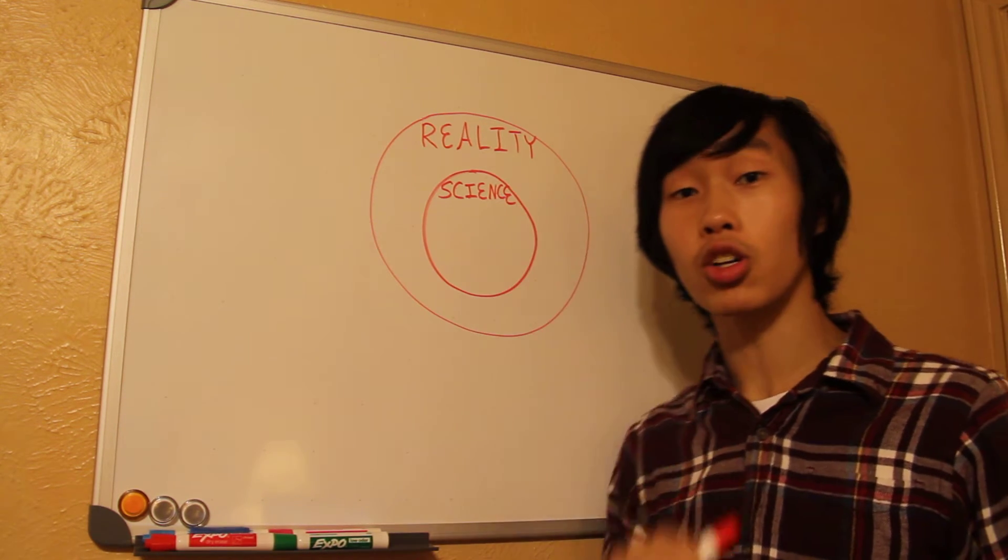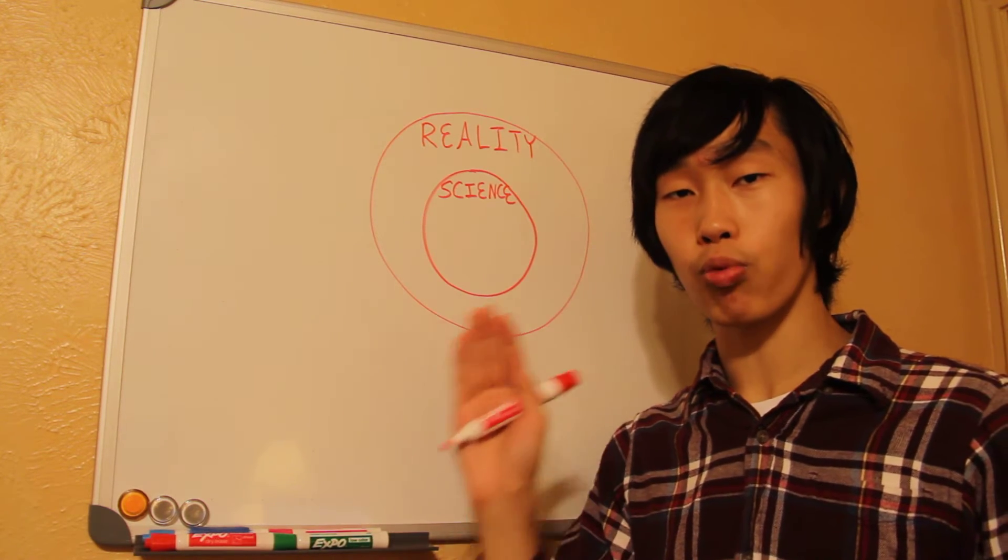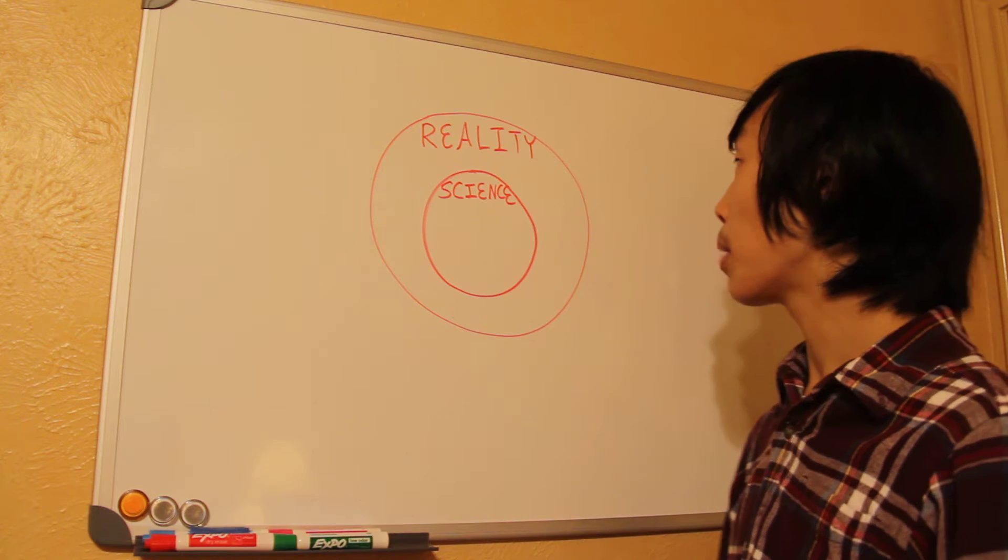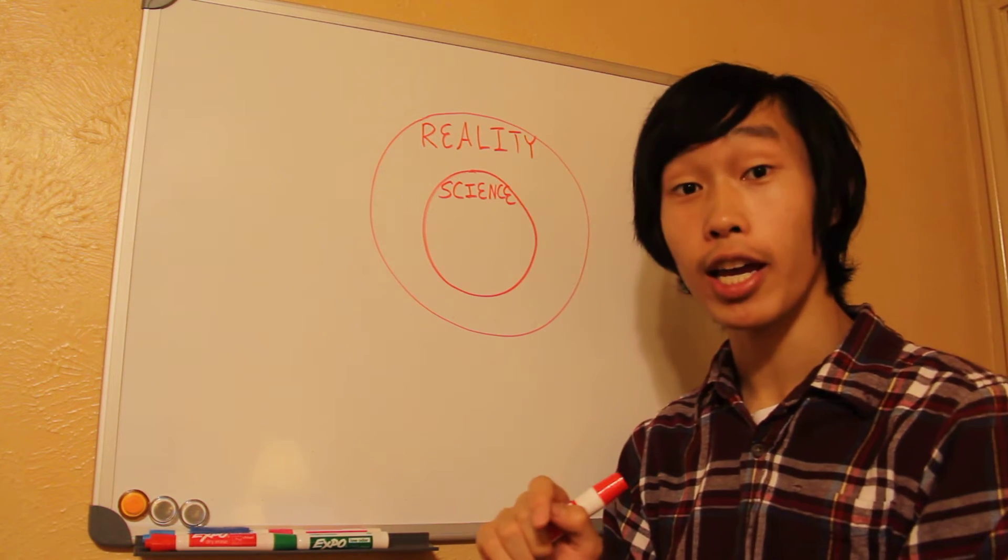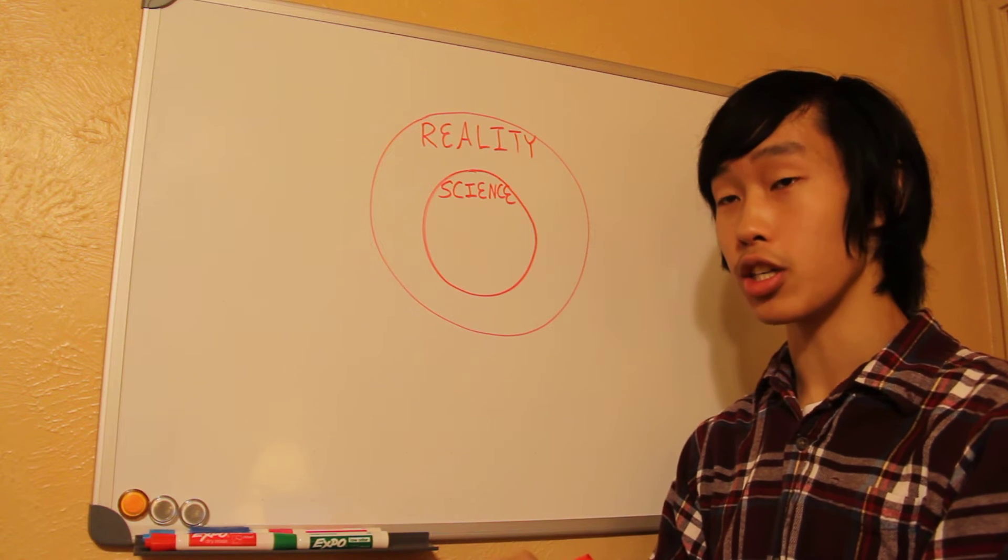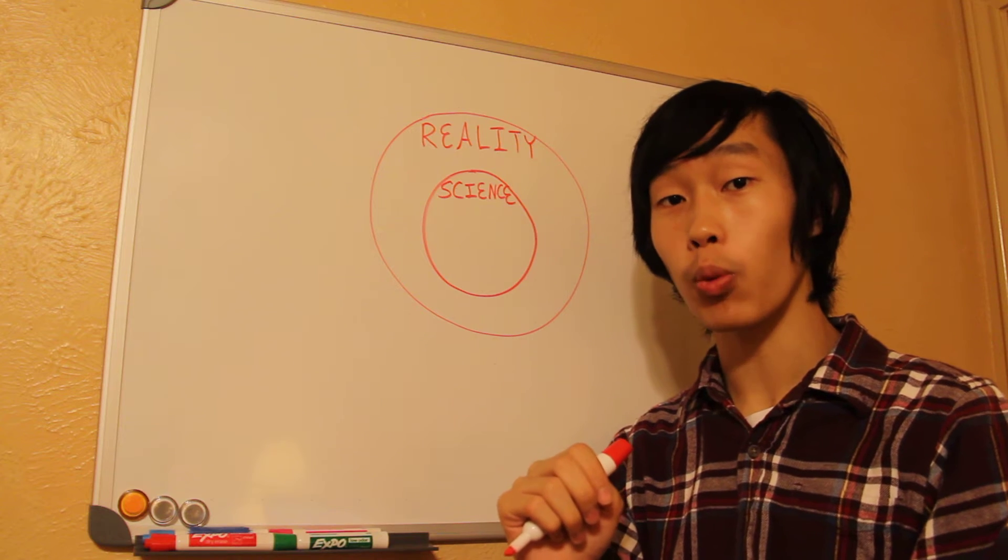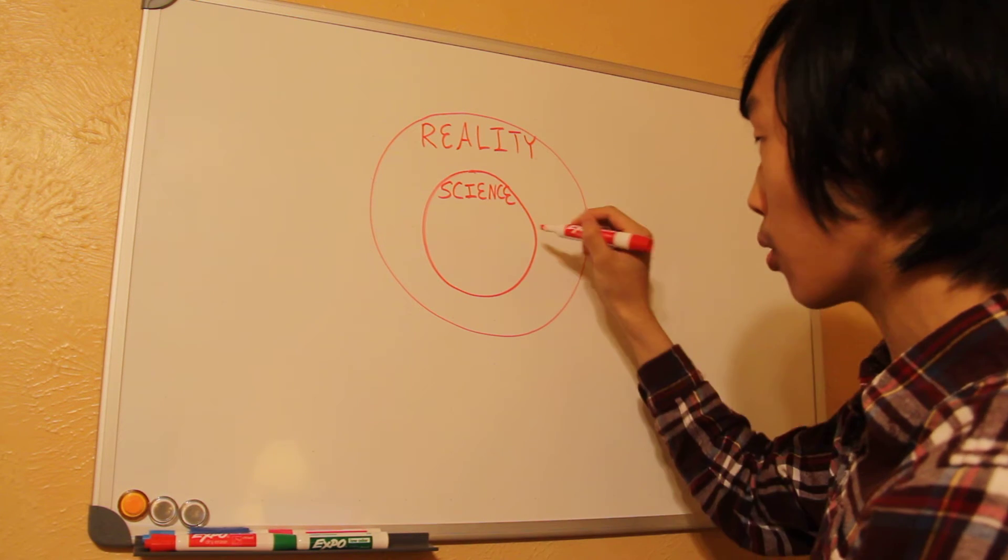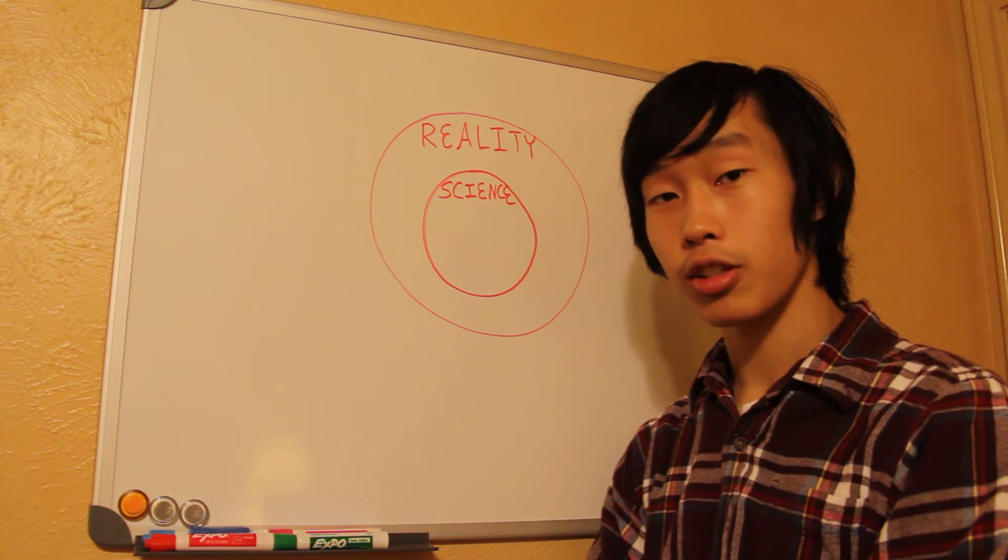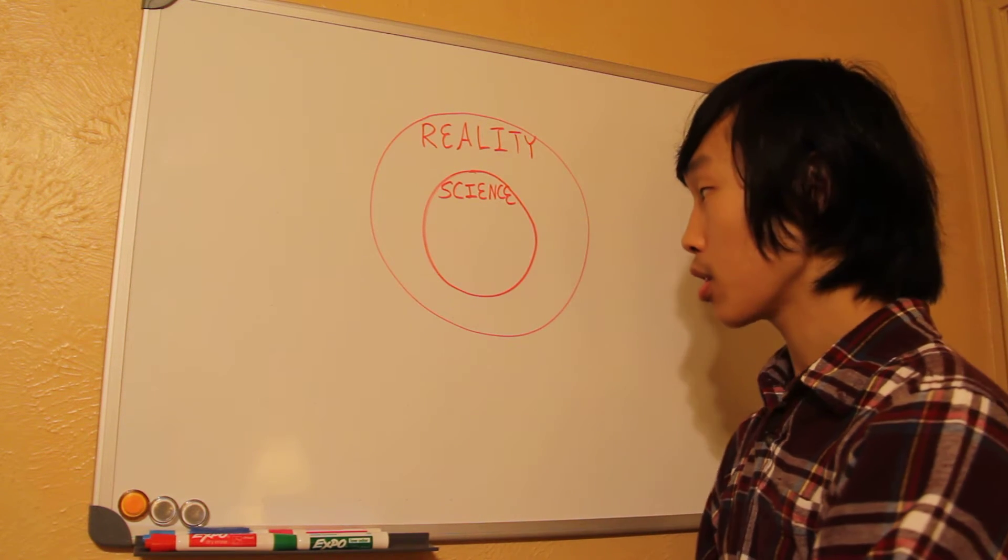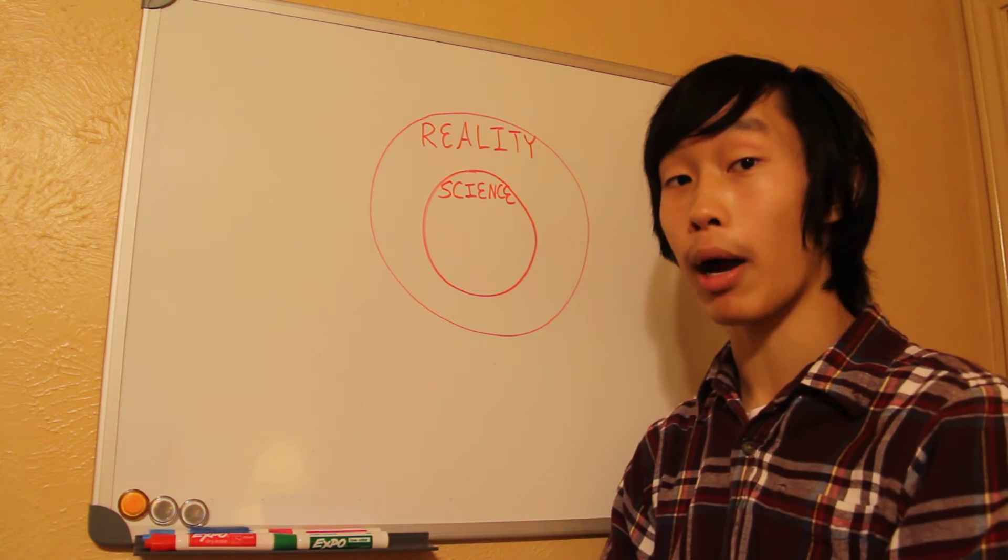This circle represents science. Everything in this circle is both real and part of reality. This is one definition of science. Because in reality, humans get to define what constitutes science and what does not. So, for example, right here, you could have sociology, the study of society. Some people might consider that a science and incorporate that into the circle. But some people might not.